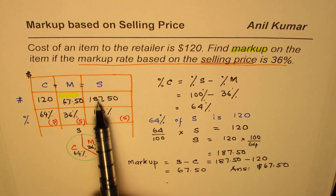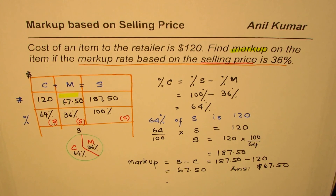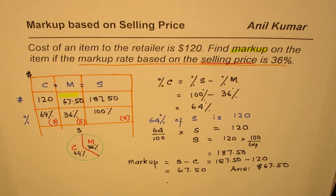You can verify that 36 percent of $187.50 is approximately $67.50. I hope with this example you understand the basic concept that markup could be based on cost price or selling price. In the retail industry, markups are most often based on selling price — take note of that. I'm Anil Kumar; you can subscribe and share my videos with your friends. Thank you and all the best.